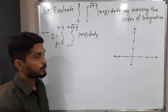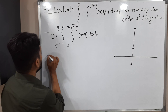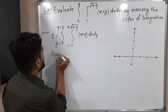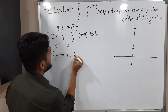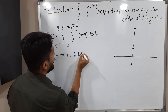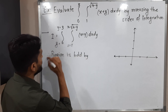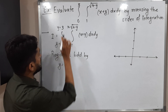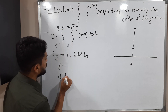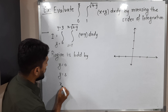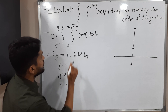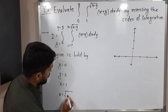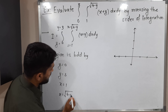So let us find the region now. The region is bounded by y equals 0, y equals 3, x equals 1, and x equals the square root of 4 minus y.